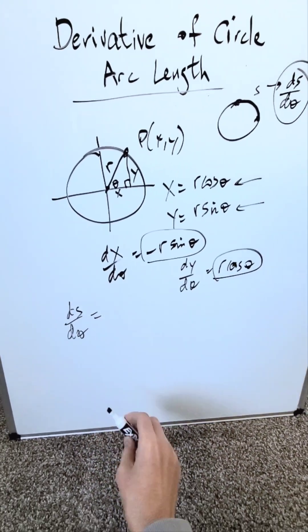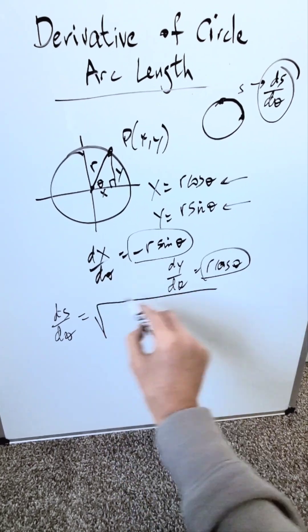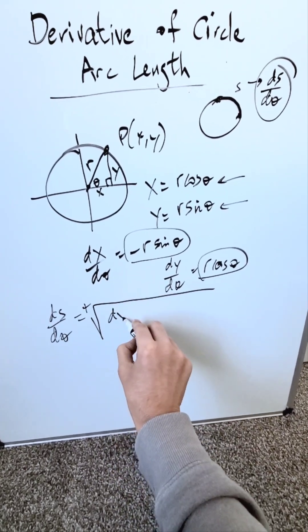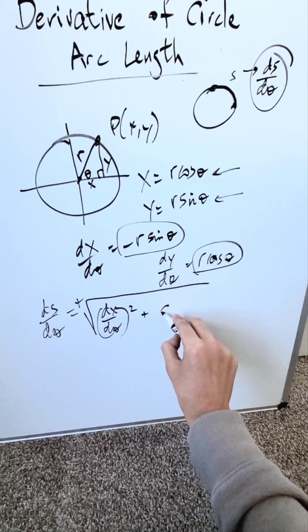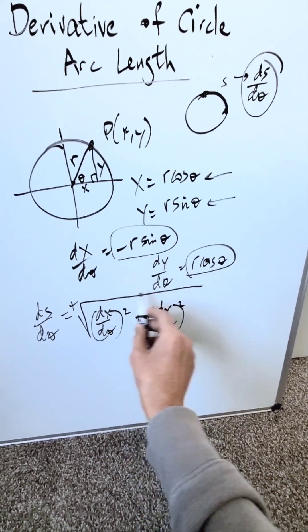The rate of change of arc length with respect to θ is equal to - using positive values - the square root of (dx/dθ)² plus (dy/dθ)².